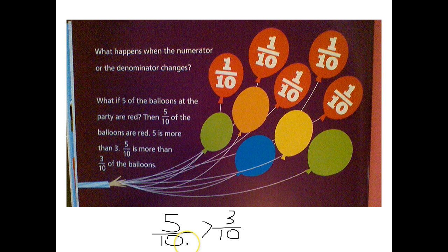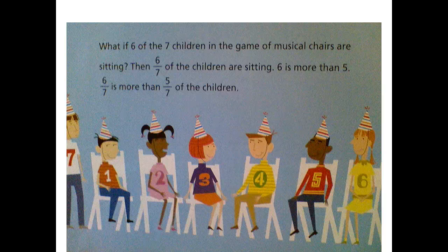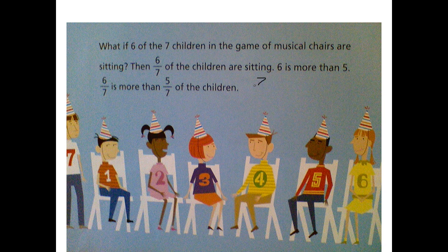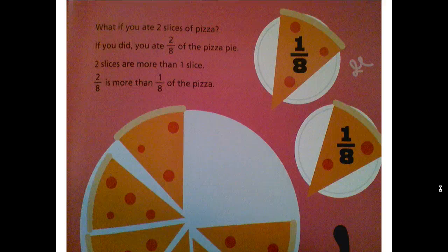What if six of the children in the game of musical chairs are sitting? Then six-sevenths of the children are sitting. Six is more than five, so six-sevenths is more than five-sevenths. We only have one child that's still standing. What if you ate two slices of pizza? If you did, you ate two-eighths of the pizza pie. Two slices are more than one slice, so two-eighths is more than one-eighth.